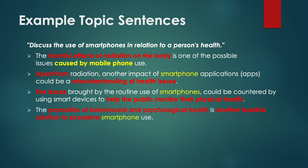The final topic sentence on the screen — the fourth body paragraph — has 'another feasible solution,' so we know it's another solution paragraph. 'The promotion of behavioral and psychological health is another feasible solution to excessive smartphone use,' so it's about a push factor to encourage healthy living — for example, monitoring how often you look at your mobile phone or eating healthier food. So these are all effective topic sentences and good models to follow.